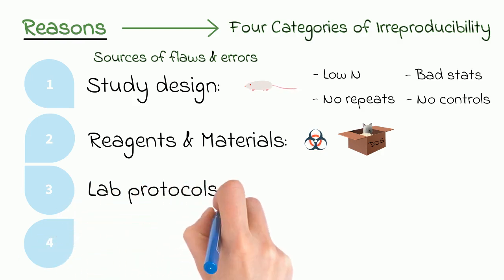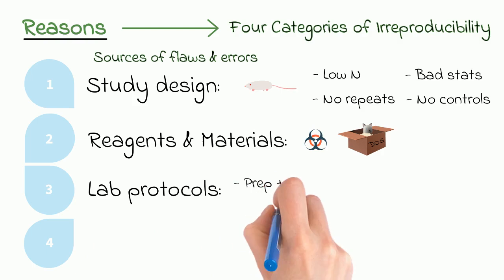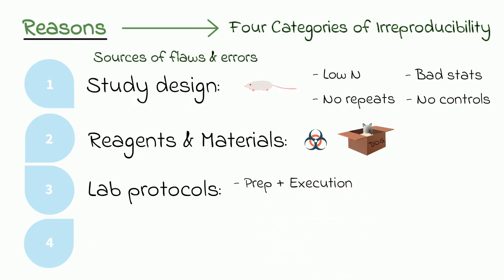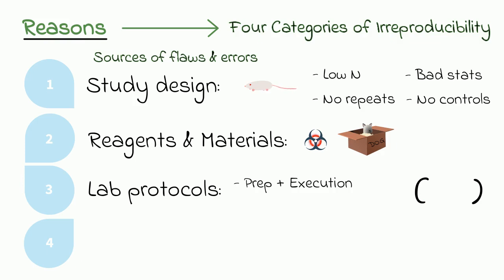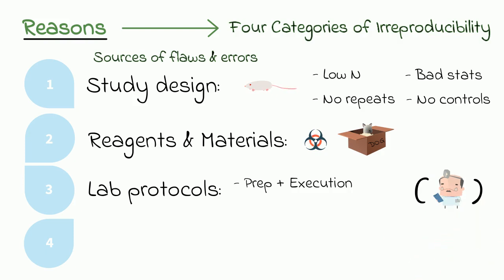The third category is laboratory protocols — the issues that come up during the prep or execution of the experiments. In this case, there weren't any studies available that directly assessed these kinds of errors in preclinical settings. So the authors had to extrapolate from two studies that assessed errors in the preparation and testing of biological samples from human patients, or in other words, clinical, not preclinical studies. This included things like wrong identification of patients, inappropriate specimen quantity or quality, and some communication issues.